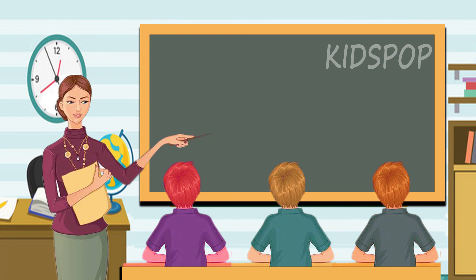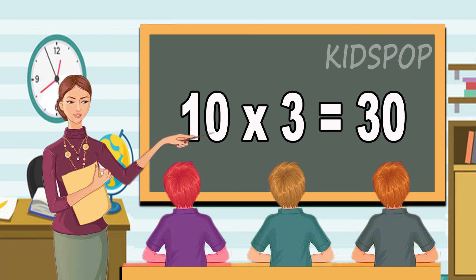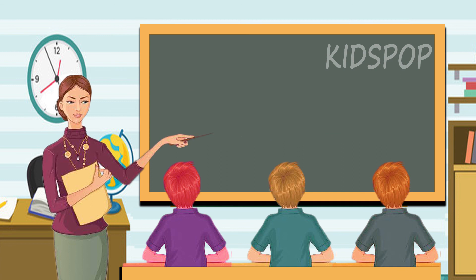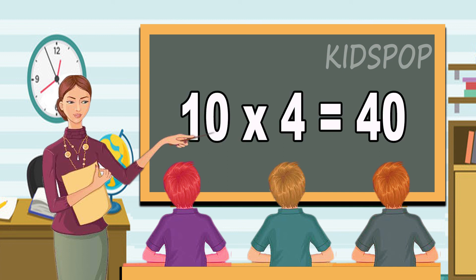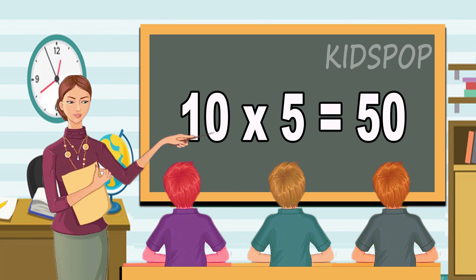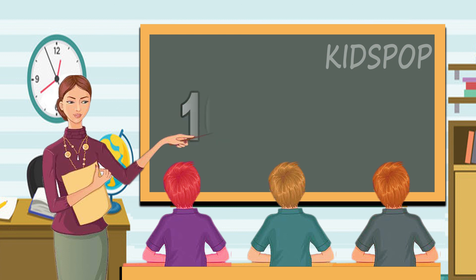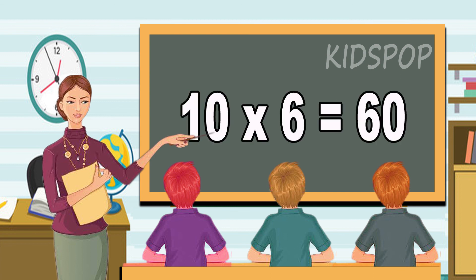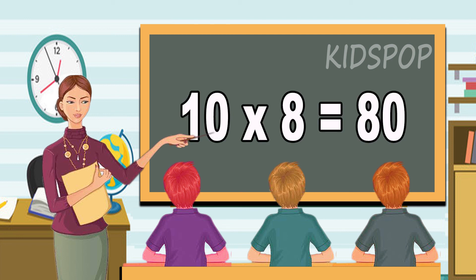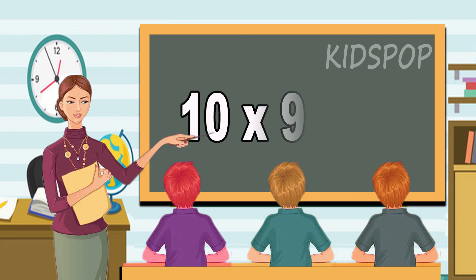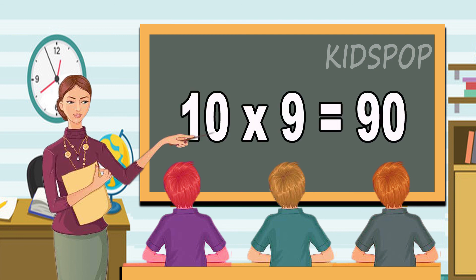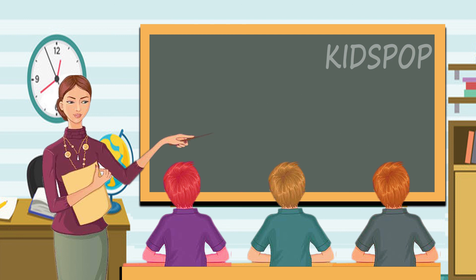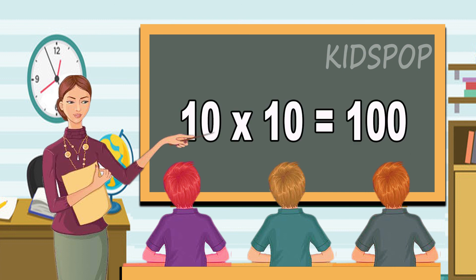Nine nines are eighty-one. Nine tens are ninety. Let's learn ten table. Ten ones are ten. Ten twos are twenty. Ten threes are thirty. Ten fours are forty. Ten fives are fifty. Ten sixes are sixty. Ten sevens are seventy. Ten eights are eighty. Ten nines are ninety. Ten tens are hundred. Thank you.